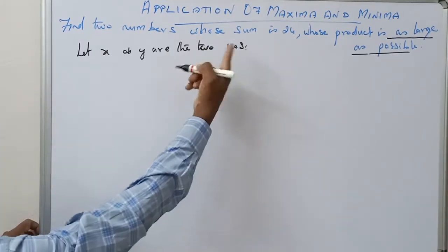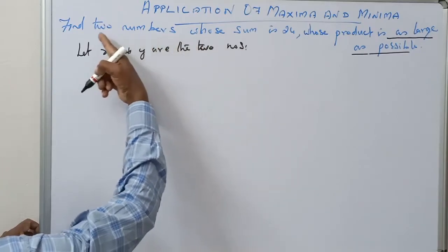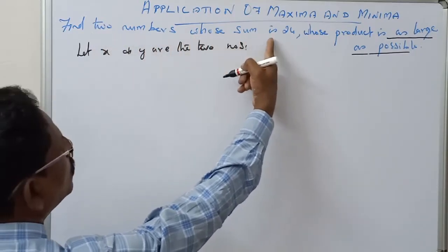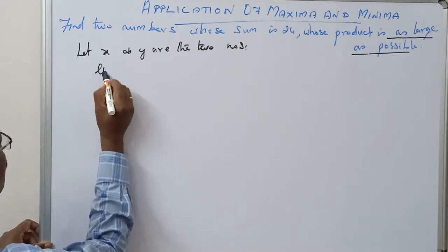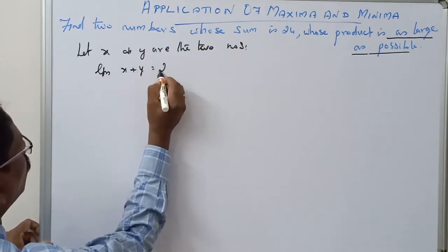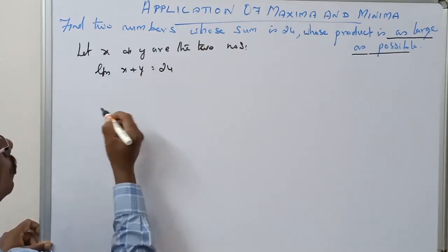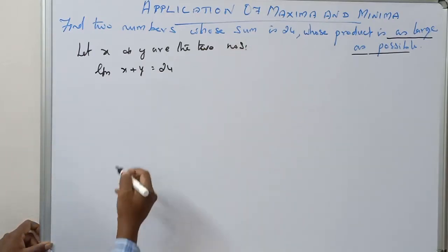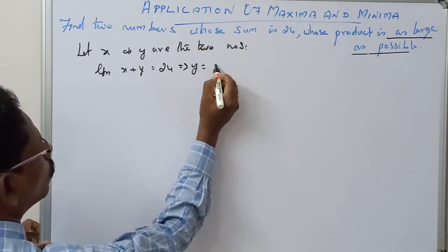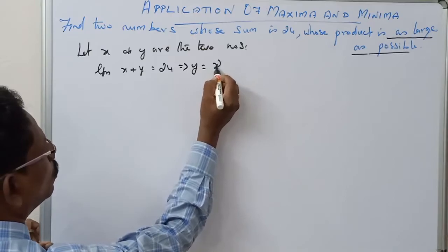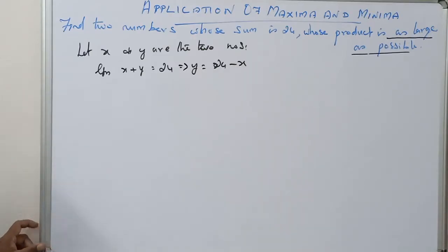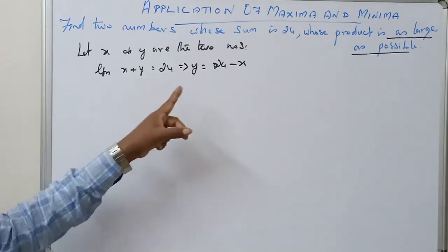Given: find two numbers whose sum is 24, so x plus y equals 24. Therefore y is equal to 24 minus x.